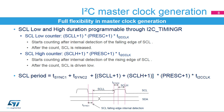The I2C master clock's low- and high-level durations are configured by software in the I2C timings register. The SCL low- and high-level counters start after the detection of the edge of the SCL line. This implementation allows the peripheral to support the master clock synchronization mechanism in a multi-master environment as well as the slave clock stretching feature. Therefore, the total SCL period is greater than the sum of the counters, linked to the added delays due to the internal detection of the SCL line edge.